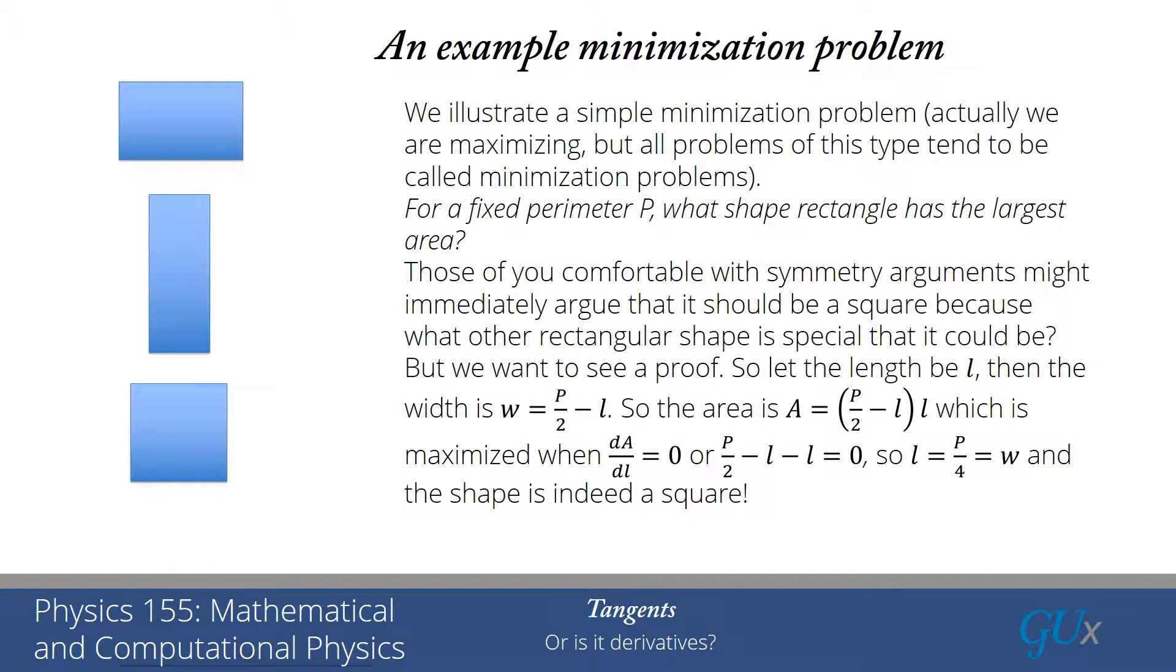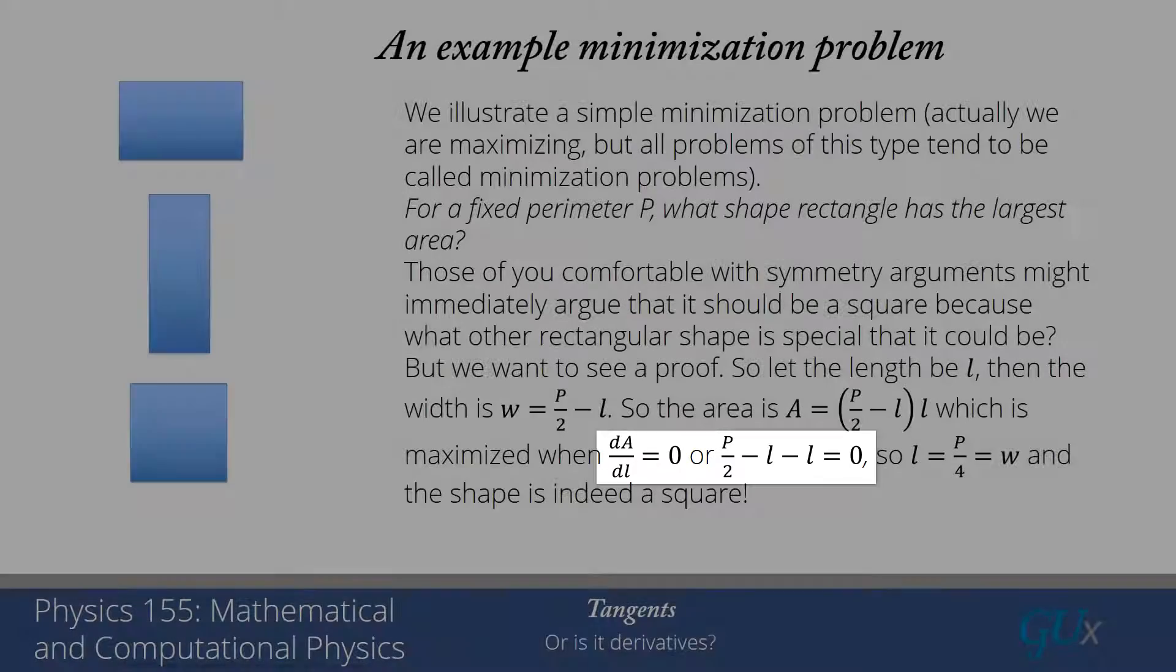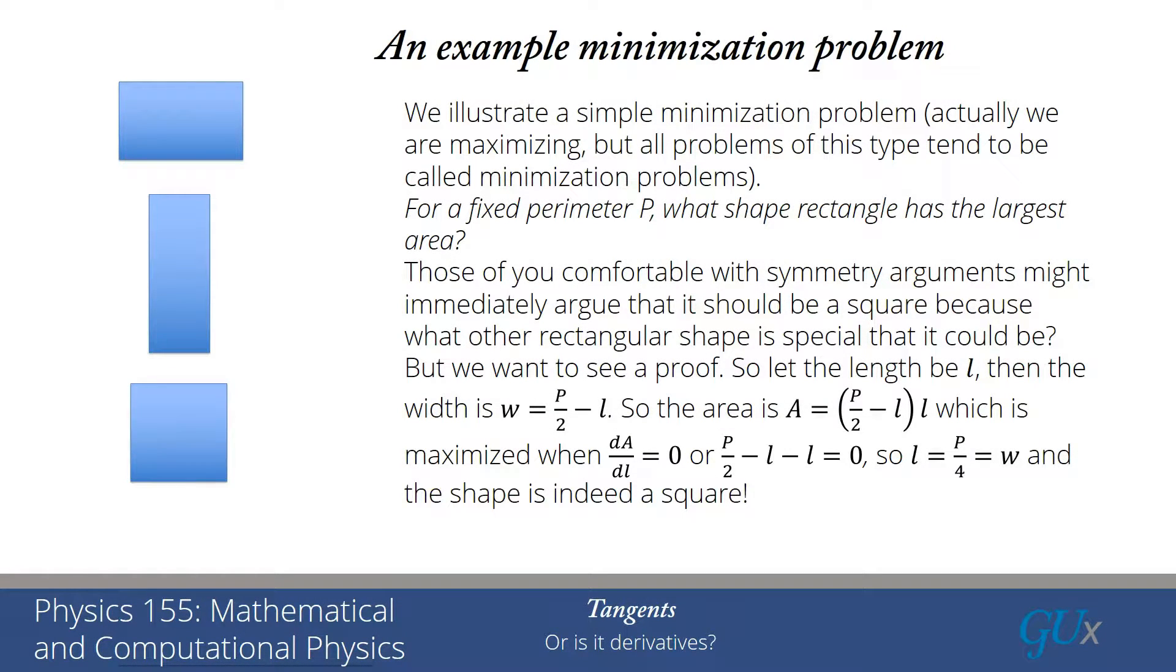And then we maximize that by taking the derivative with respect to l. l is the only variable that we have left in the problem. When I take that derivative, I will get p over 2 minus l. That comes from taking the derivative with respect to the second term in the factor. And then I get a minus l by taking a derivative with respect to the first term in the factor. The net result of that is that I get p over 2 minus 2l is equal to 0.